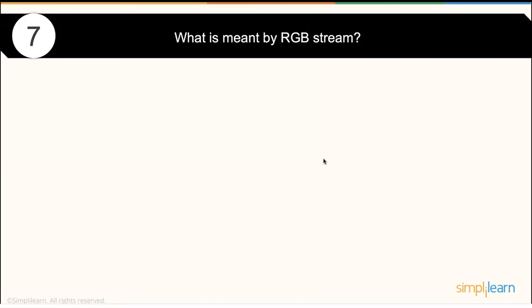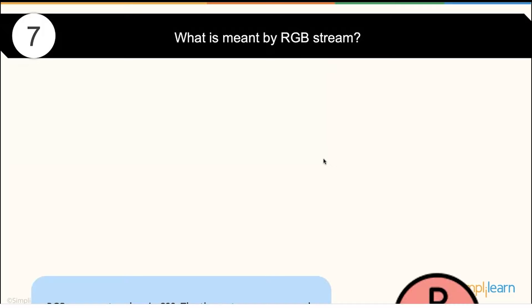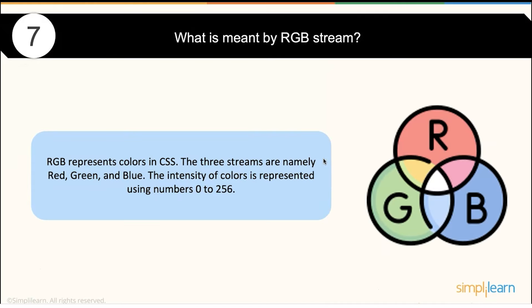What is RGB? RGB stands for Red, Green, and Blue. It represents a color in CSS. The color values start at 0 and go up to 256.